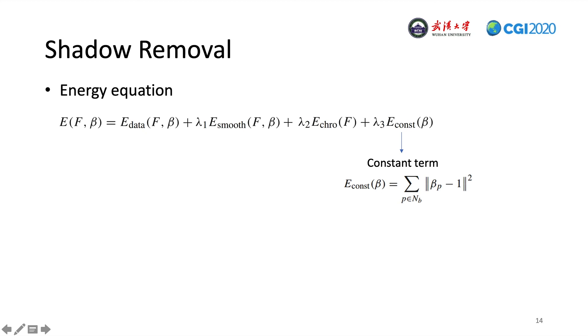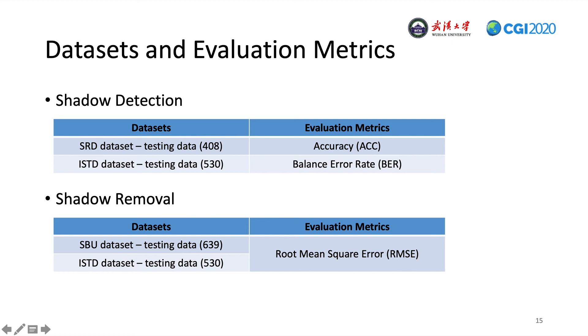The last term is the constant term. We pick the reliable lit pixels that should maintain their beta color and enforce their value to be 1. To better evaluate our method, we respectively adopt two datasets to evaluate our shadow detection and shadow removal methods. The evaluation metrics are shown here.